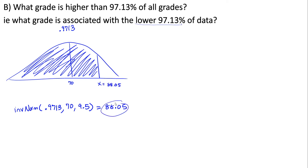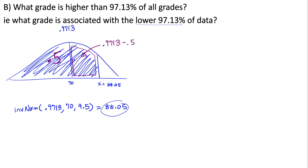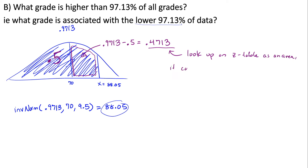Using the tables, we need the area between the mean and the z-score, since that's what the table provides. If the whole left region is 0.9713 and the left half is 0.5, then the piece between the mean and our score is 0.9713 − 0.5 = 0.4713. We look this up on the z-table — or the closest value — and it corresponds to z = 1.9.